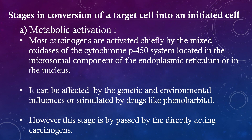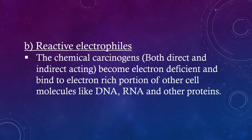Stages in conversion of a target cell into an initiated cell begin with metabolic activation. Most carcinogens are activated chiefly by the mixed oxidases of the cytochrome P450 system, located in the microsomal component of the endoplasmic reticulum or in the nucleus. This can be affected by genetic and environmental influences or stimulated by drugs like phenobarbital. However, this stage is bypassed by directly acting carcinogens. Both direct and indirect acting chemical carcinogens become electron deficient and bind to electron-rich portions of cell molecules like DNA, RNA, and other proteins.